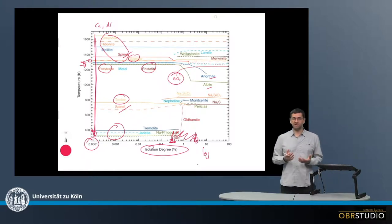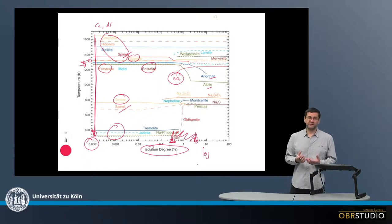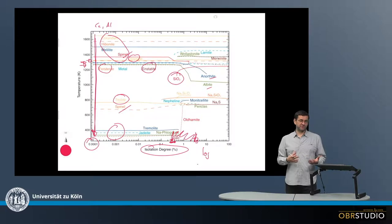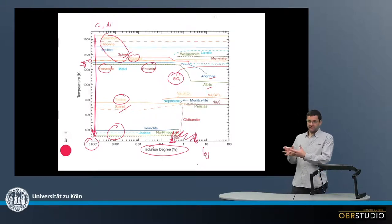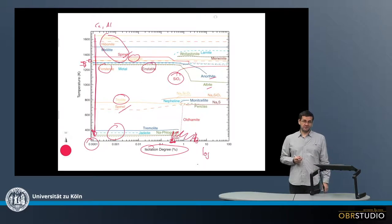And this is in particular importance because this is something that we directly observe in meteorites. When we look at chondrules, these are often mineralogically zoned. So they have olivine in the core, surrounded by pyroxene, and in rare cases even some silica. So this is a very, directly shows the condensation sequence and the fractional condensation sequence.